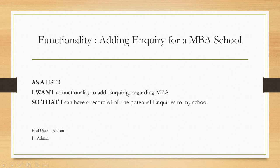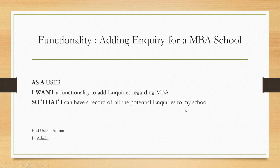That means the admin needs a functionality to add inquiries regarding MBA, 'so that I can have a record of all the potential inquiries to my school.' Here, both 'I' and 'user' represent the admin. It is very clear from the user story that the admin needs a functionality to add inquiries so that he can have a record of all potential inquiries to the school.